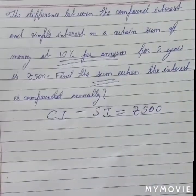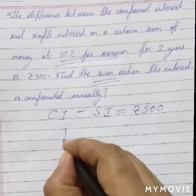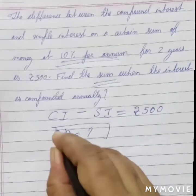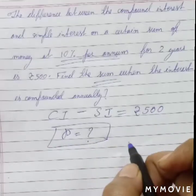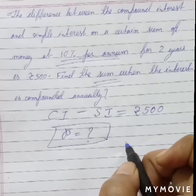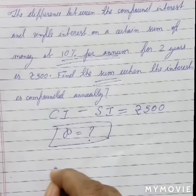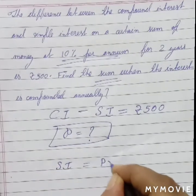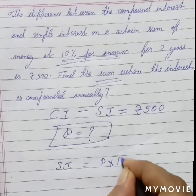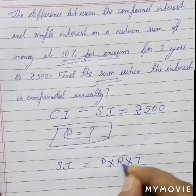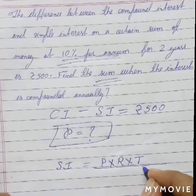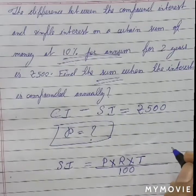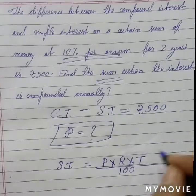What are we asked? We have been asked the principal. Let's say P stands for principal. For simple interest, we know the formula: principal into rate of interest into time, divided by 100. Here P stands for principal, R stands for rate of interest, and T stands for time. So SI = P × R × T / 100.